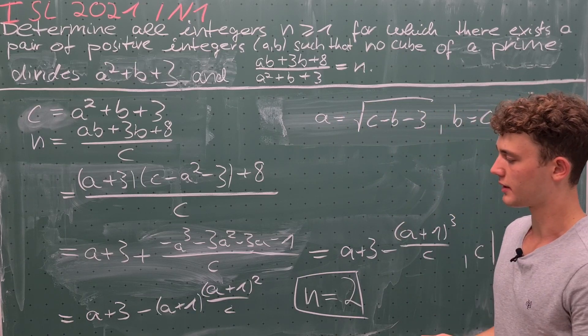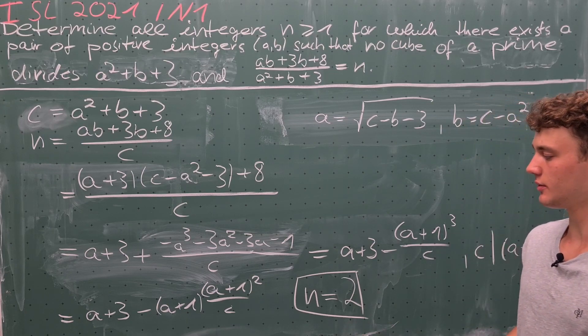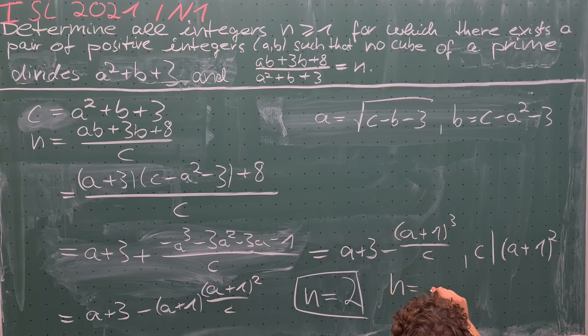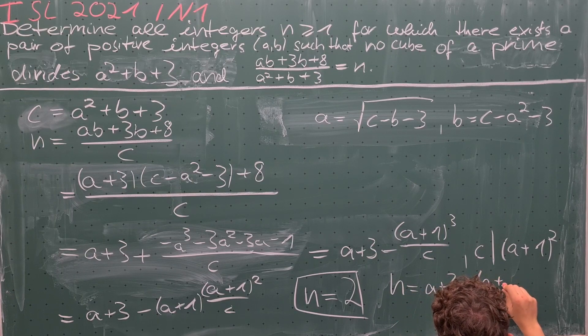And in all of the other cases where this is not equal to 1, but rather some larger integer, then we would have something like n = a + 3 - (a+1) times k,